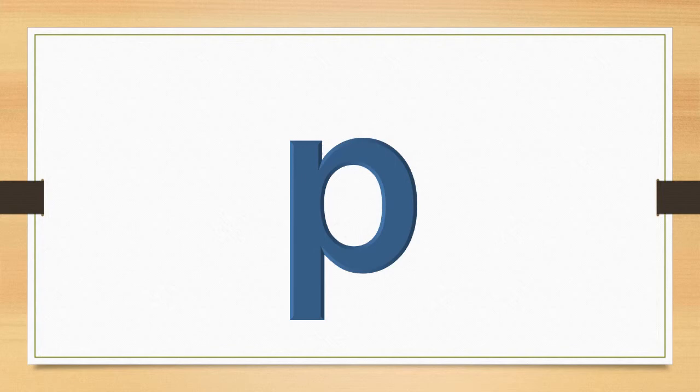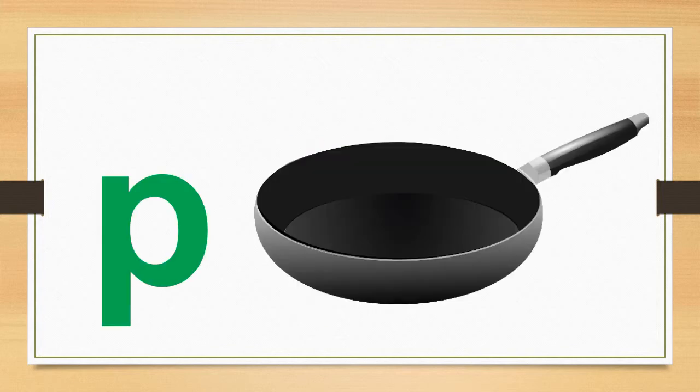What sound does the letter P make? The letter P says P. P says P. The word pan starts with the sound P. P, pan, P. Say it with me. P, pan, P.